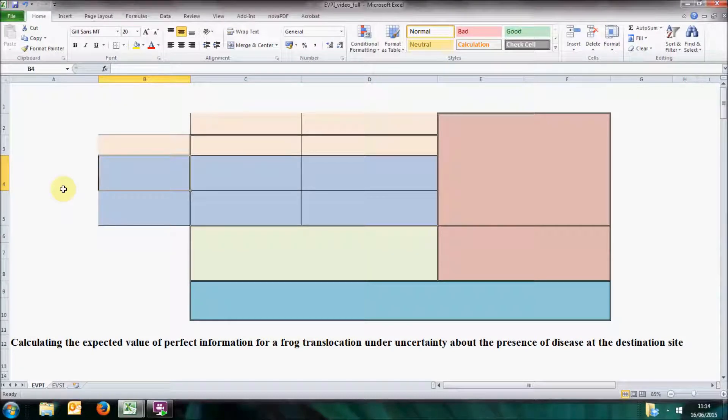Hello and welcome to the first supporting video for our article about value of information analysis for applied ecologists. In this video we'll show how to use a spreadsheet to calculate the value of perfect information, and we use an example of a frog translocation under uncertainty about the presence of disease at the destination site.